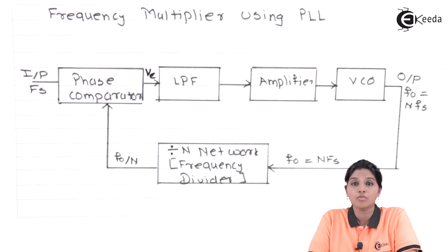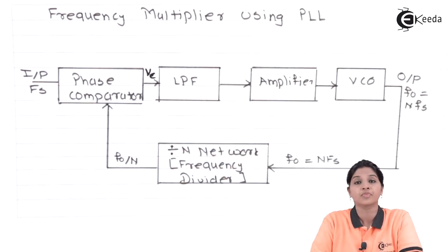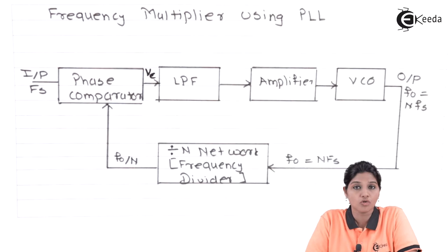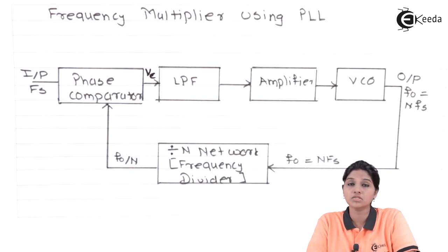The voltage is further given to a block called the low pass filter, where all high frequency noise signals are removed and only the low frequency components are passed through the filter. At the output of the filter, we get a ripple-free DC voltage as output.